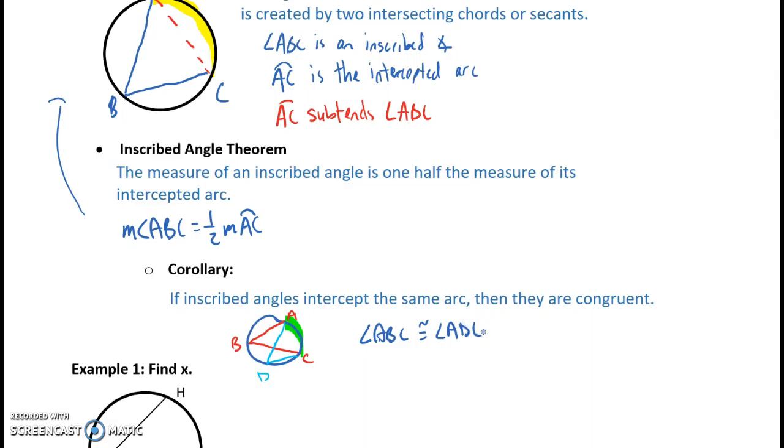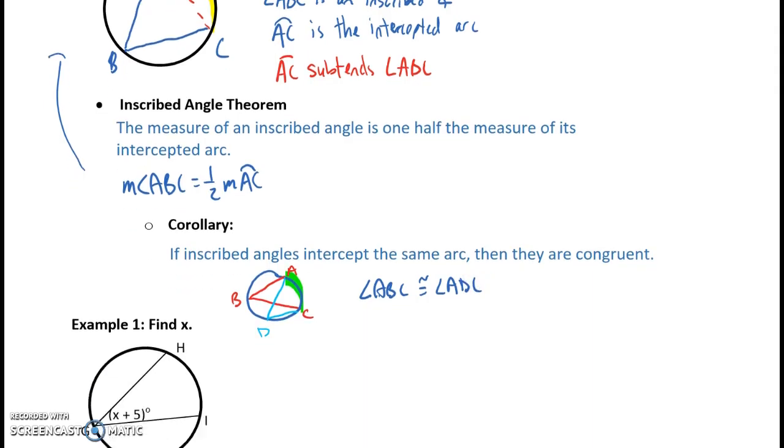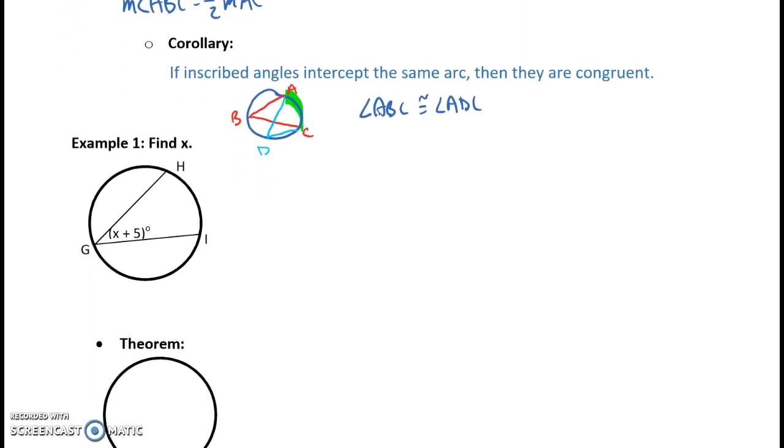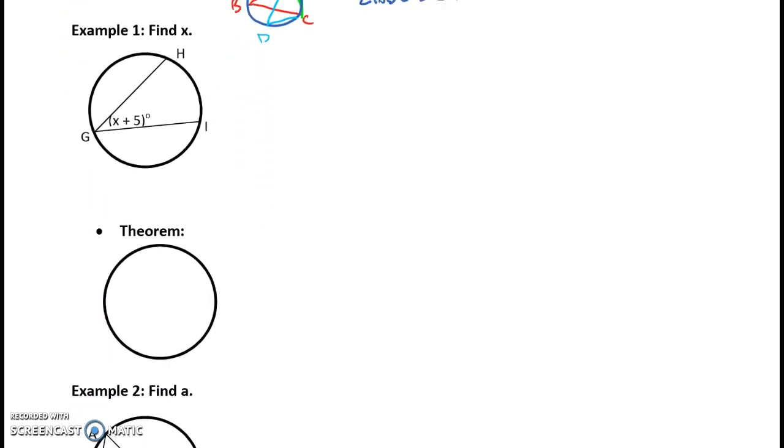So that's a corollary that just kind of relates to that inscribed angles theorem. But let's go ahead and use that theorem to talk about example one. So I want to go ahead and find the measure of X. And you know what I realized? I totally forgot to give you the other value. So this value, HI, is 4X minus 6 degrees. Let's pretend that I wrote that down already. All right. So if we have HGI is X plus 5 and HI, that arc, is 4X minus 6, what's that relationship?